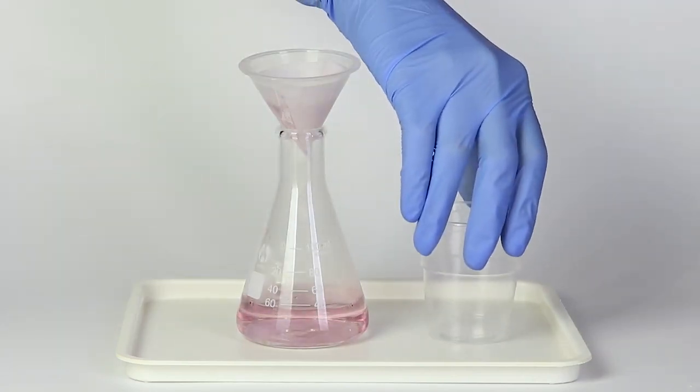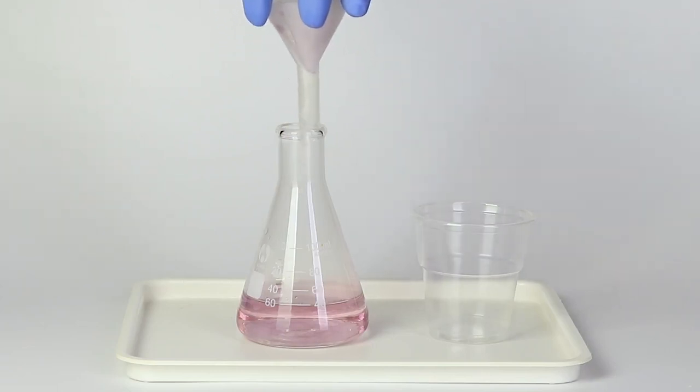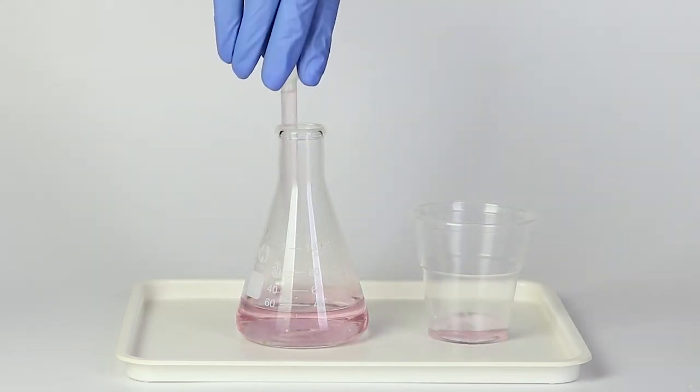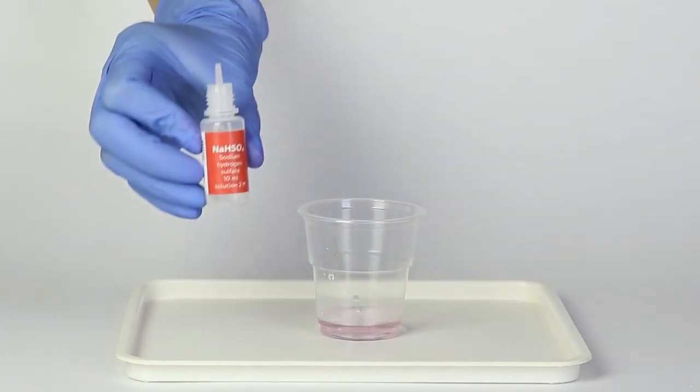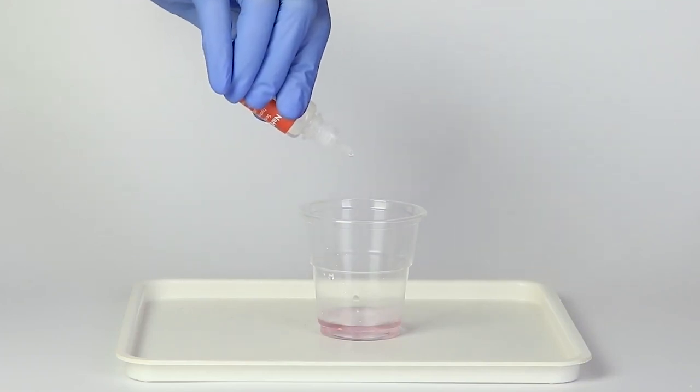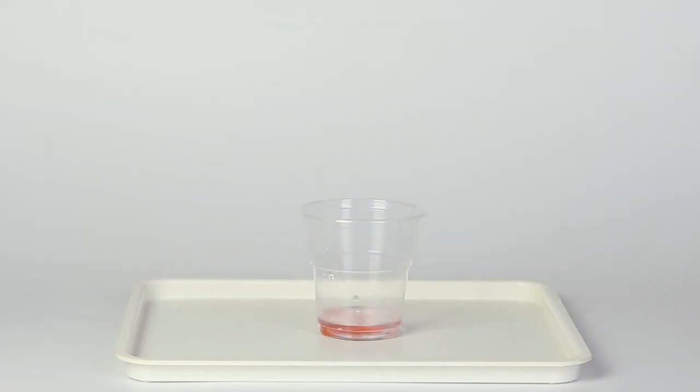Take one more disposable cup and pour some filtered solution into it using a pipette. Then add three drops of sodium hydrogen sulfate solution. The solution will change colors from pink to red.